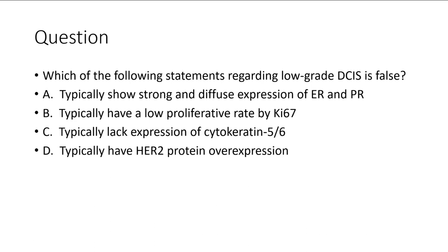Question: which of the following statements regarding low-grade DCIS is false? Low-grade DCIS typically shows strong and diffuse expression of ER and PR — true. It typically has a low proliferative rate by Ki-67 — true. It typically lacks expression of cytokeratin 5/6 — true. It does not typically have HER2 overexpression. On all cases of DCIS you order estrogen and progesterone receptor; there is no need to order Ki-67 or HER2. However, HER2 overexpression is not uncommon in high-grade DCIS but is generally negative in low-grade DCIS.